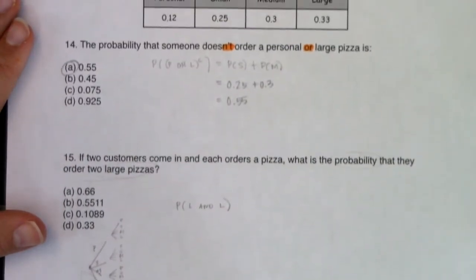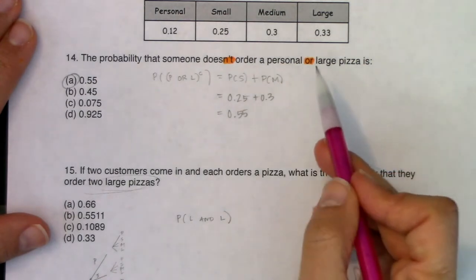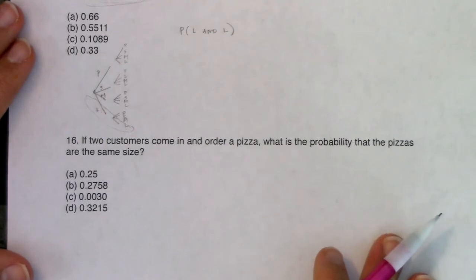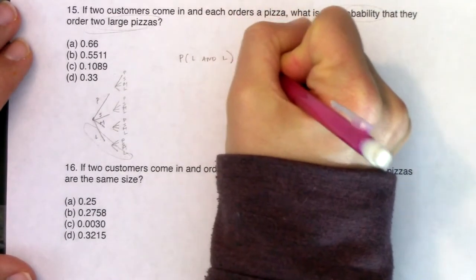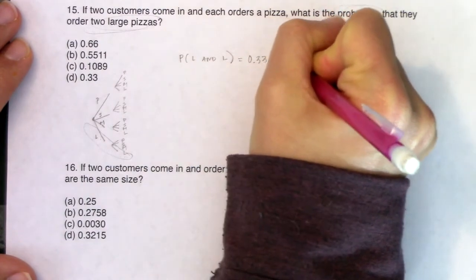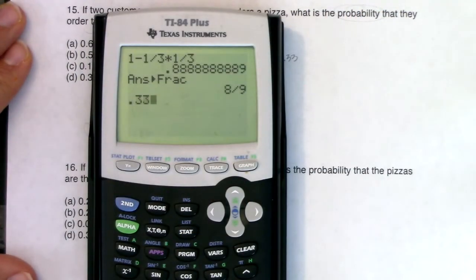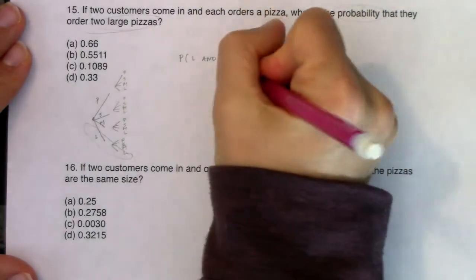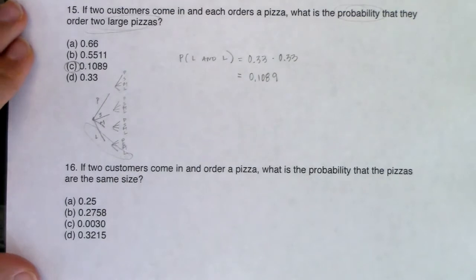If we're doing an AND, we would multiply the respective probabilities. Let's go see what was the likelihood that somebody ordered a large. If I refer back to my table, it's looking like it was about 33%. So we are looking at 0.33 times 0.33, so we're looking at about 11%, or 0.1089. I don't even have to round to 11%—there is the answer hanging out directly for me.